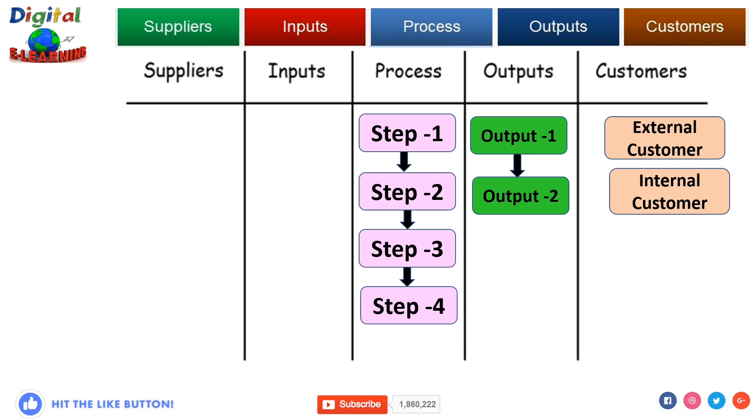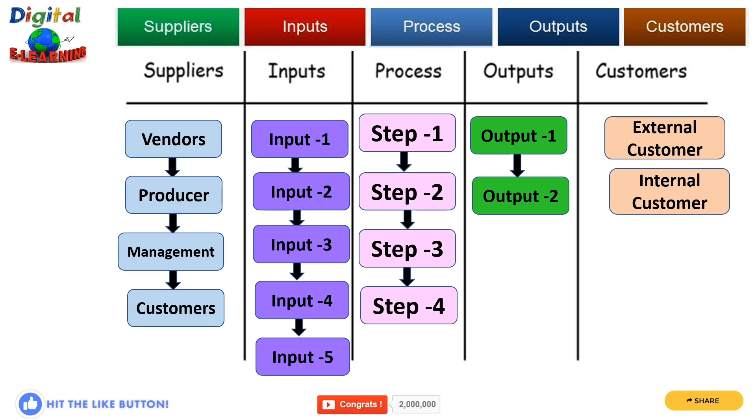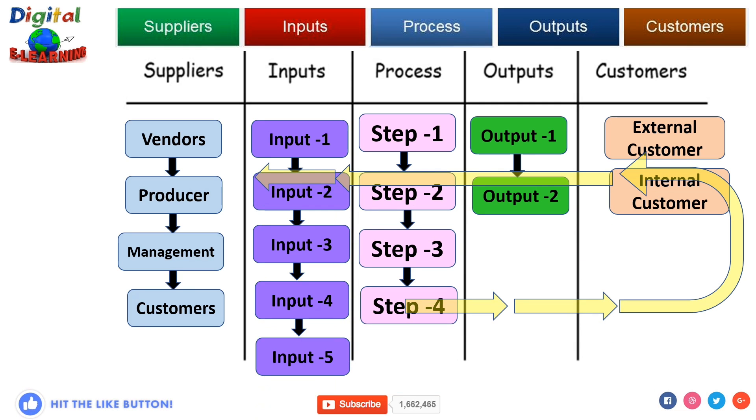Next, we identify the Inputs. Here you write down inputs required for a process to function properly. Just like every previous step, focus on most important steps. You can list four to six main inputs. Finally, it's time to list down the Suppliers. Suppliers could be your vendors, producers, management, or customers. So here the process flows like: Process, Output, Customer, Input, and Supplier. That is your overview of SIPOC diagram and how to construct it.